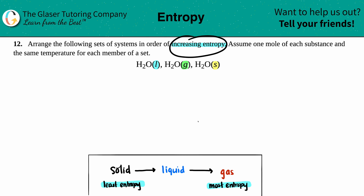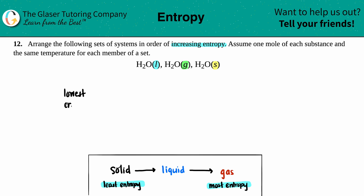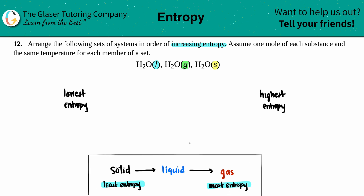When you see a difference in states — solid, liquid, gas — we can use that to our advantage to figure out which one has the highest entropy. If we're looking for increasing entropy, we want to start with the lowest entropy first and go to the highest. I wrote down a little cheat sheet — information we need to memorize because it's probably not going to be given to you on a quiz or test.